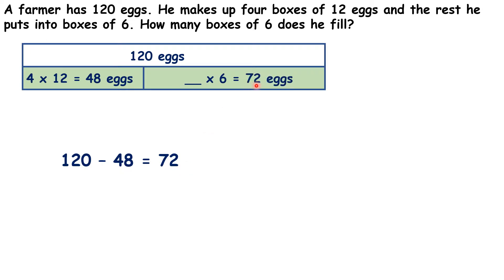So he was putting 72 eggs into boxes of 6. Here, you can see that we have a missing number multiplication. He made groups or boxes of 6, and he had 72 eggs in total. So how do we work out the missing number? We use the inverse operation, and 72 divided by 6 is 12.